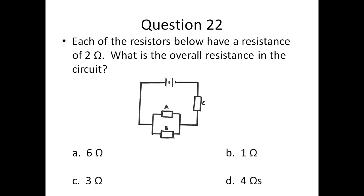Question twenty-two: each of the resistors below have a resistance of 2 ohms. What is the overall resistance in the circuit? A) 6 ohms, B) 1 ohm, C) 3 ohms, or D) 4 ohms.